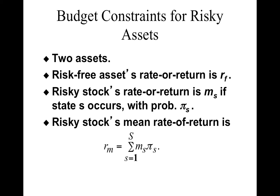Welcome to week six, second lecture. In the last lecture we saw how to represent preferences over a risky asset. From everything we've done to figure out optimal consumer choice — whether it's current and future consumption or preferences over different kinds of assets — two things we always need: one is preferences, and the second is some representation of affordability, which is a budget constraint.